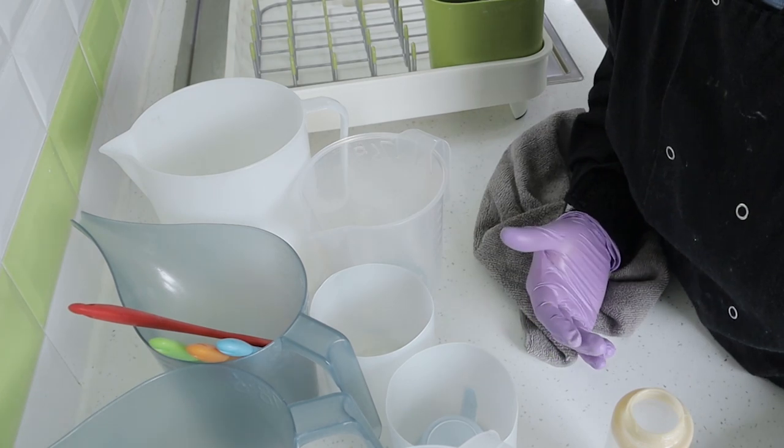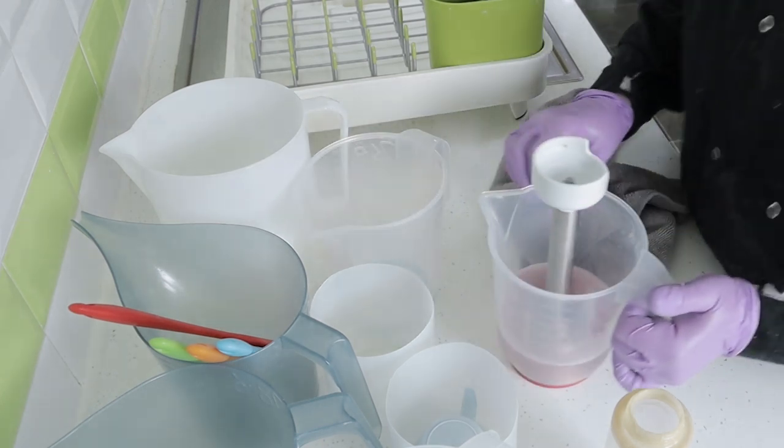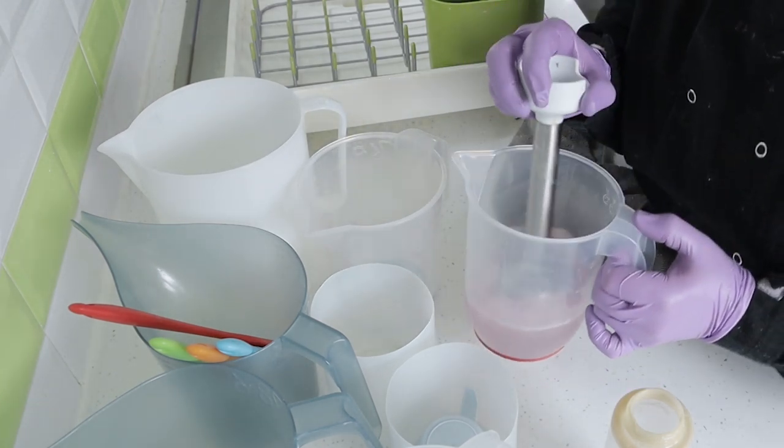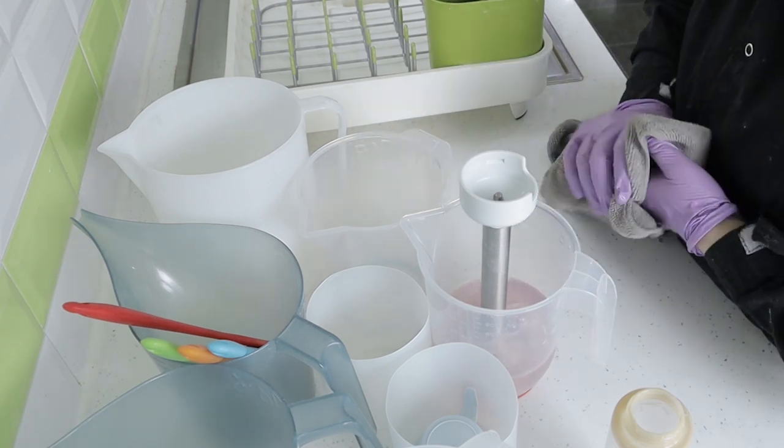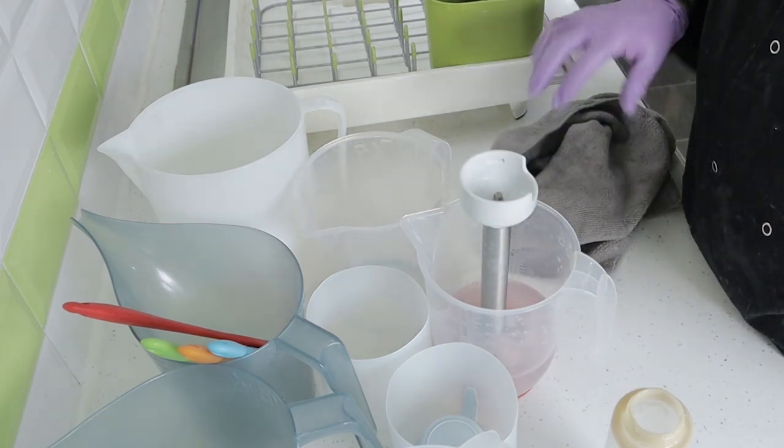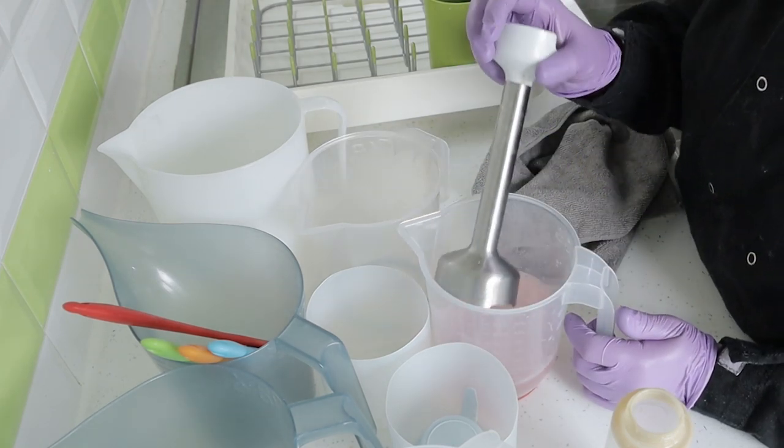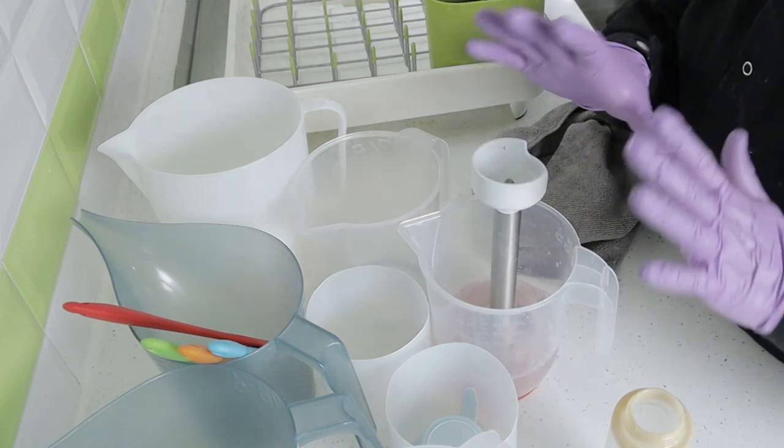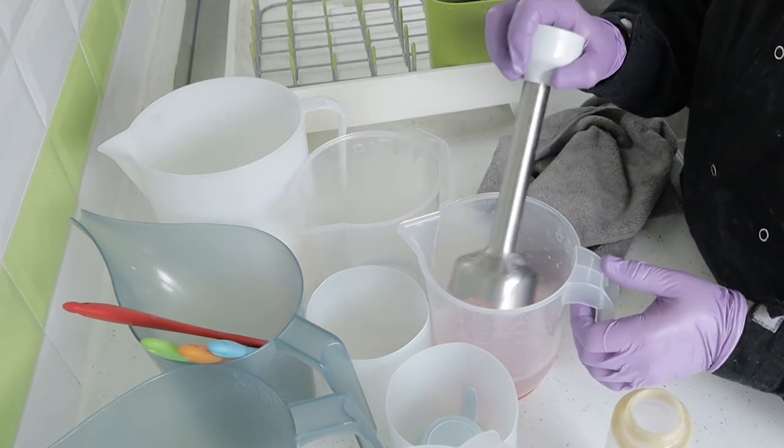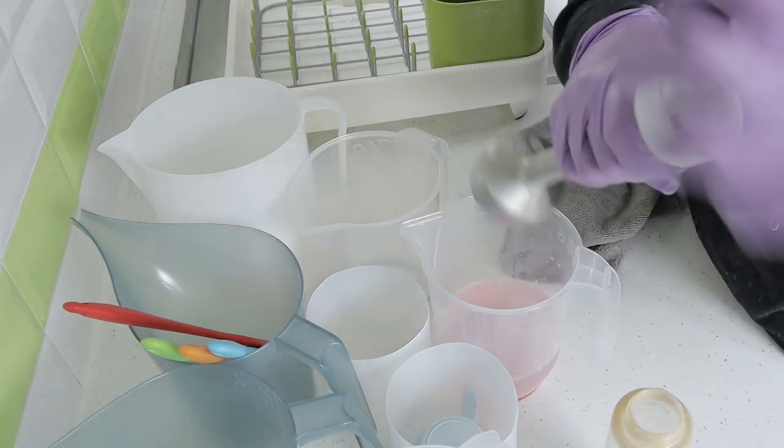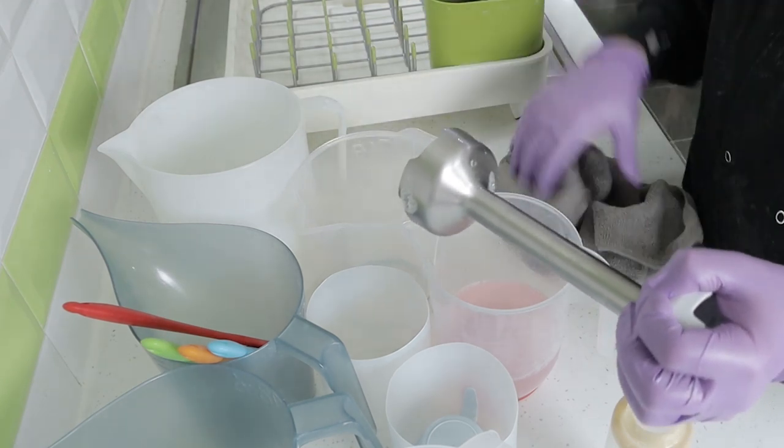And then moving on to the stick blender. With my stick blender I literally clean it as soon as I finished emulsifying. If you've watched any of my videos you'll probably see that typically I blend just till I get to emulsion and then I never use the stick blender anymore. So as soon as I've got to that emulsion I will literally take my stick blender apart, don't do this while it's still attached, and I will get my cloth and I will wipe down the shaft of the stick blender and all inside.